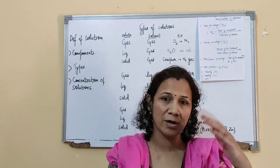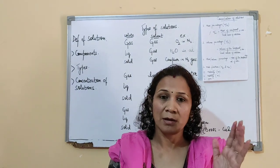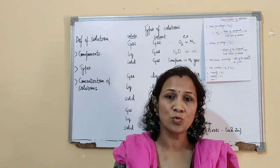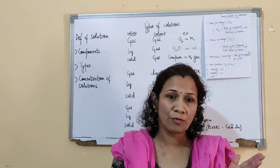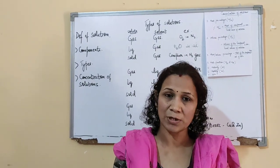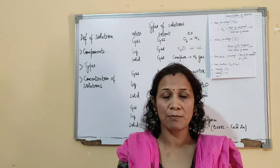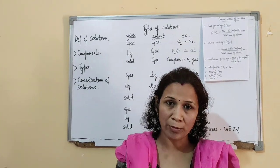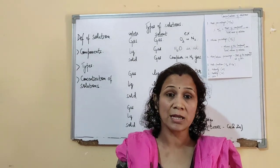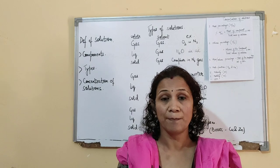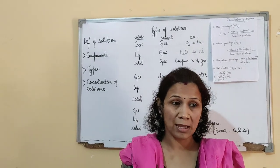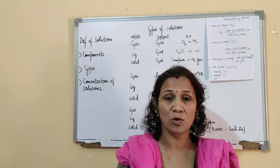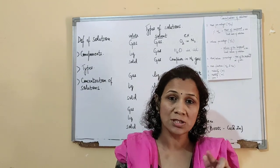Just a brief recap of what we have already done in class 11. We already know a little about mixtures. When we say mixtures, we say it is a mixture of 2, 3 or more things together. Whenever we talk of solutions, it is a type of mixture. A mixture can have 2 or 3 components uniformly mixed, and we say it is a homogeneous mixture. For example, if I take sugar and dissolve it in water, the sugar gets uniformly dissolved and it makes a homogeneous mixture.